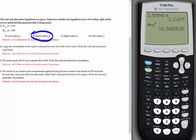Number four. A popular referendum on the ballot is favored by more than half of the voters. Write the null and alternative hypothesis. H0, HA. It's about favoring more than half, more than 50%, so it's a proportion. You put p and p. The null has p equals 0.5, the alternative has p greater than 0.5.